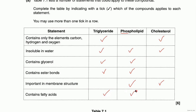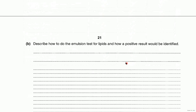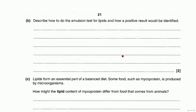That should have been straightforward enough. Now describe how to do the emulsion test for lipids and how a positive result would be identified. What you need to do is mix your lipid with ethanol.